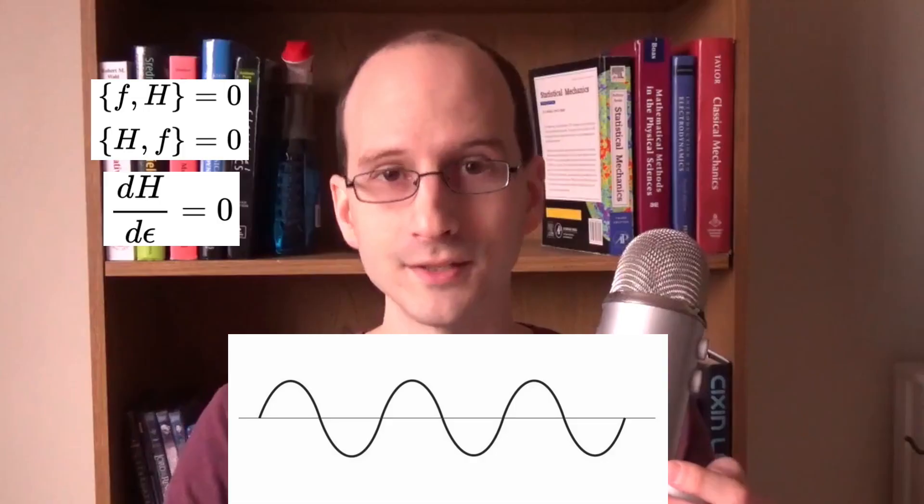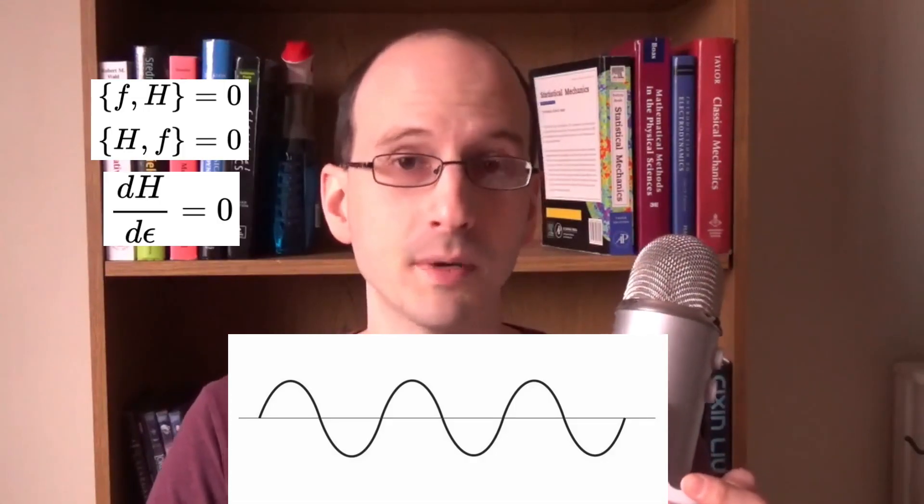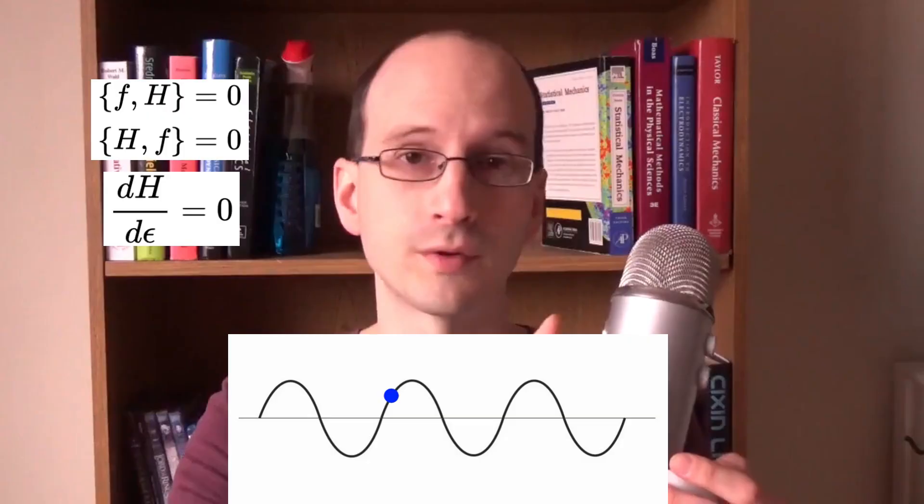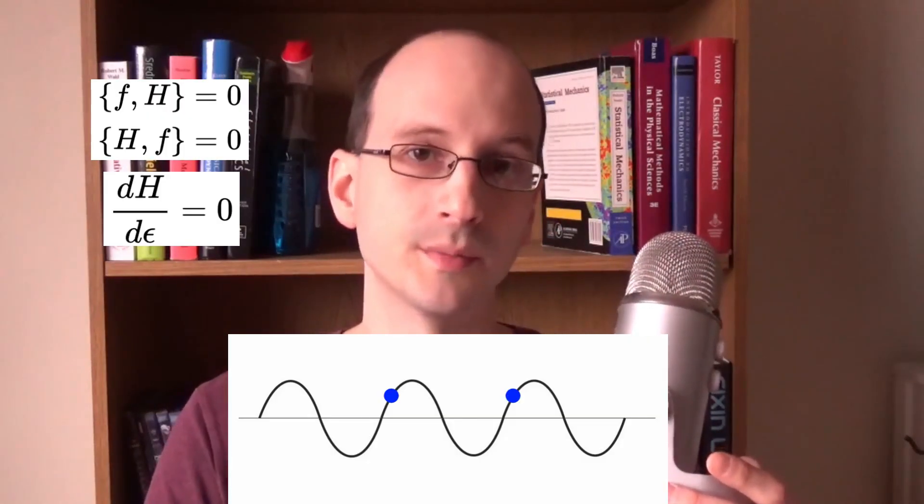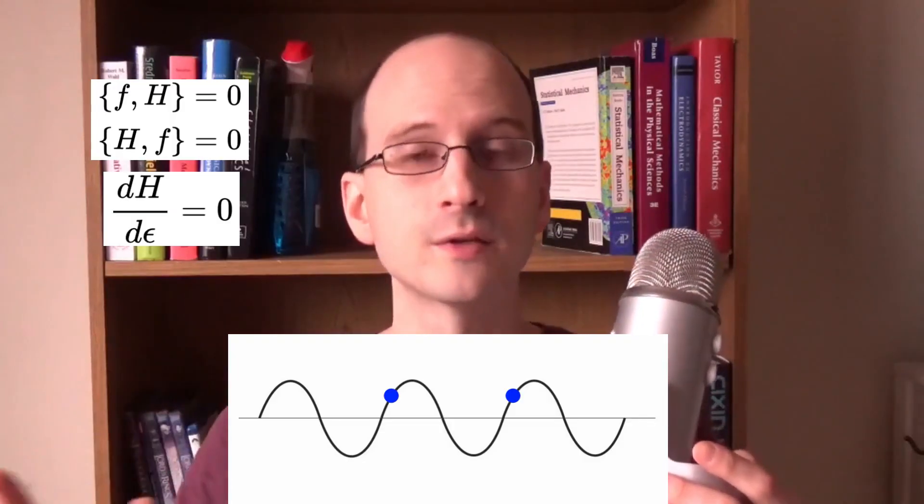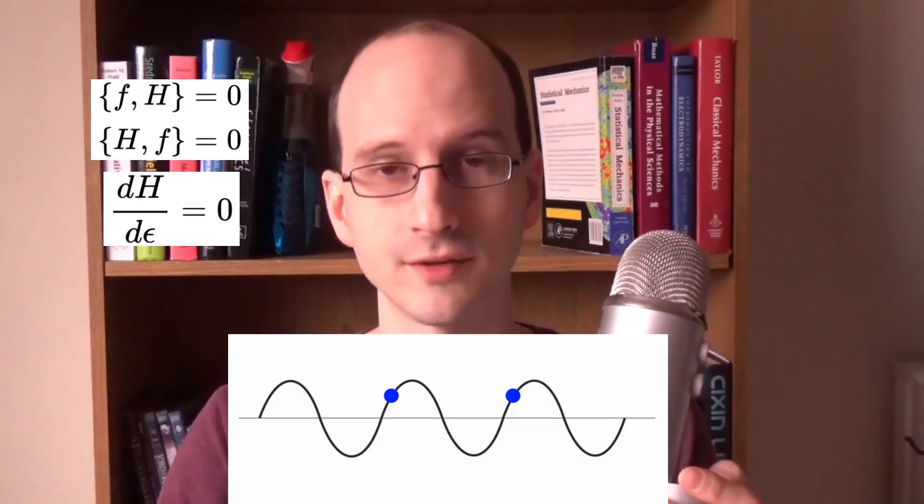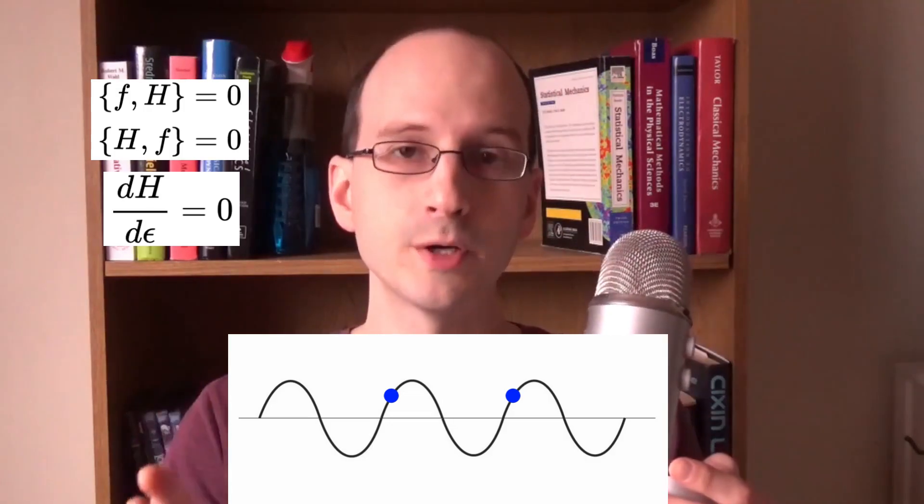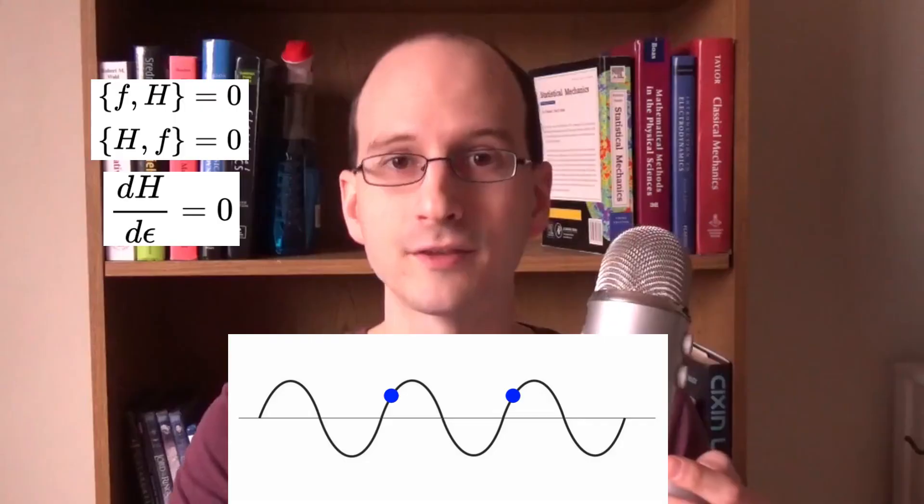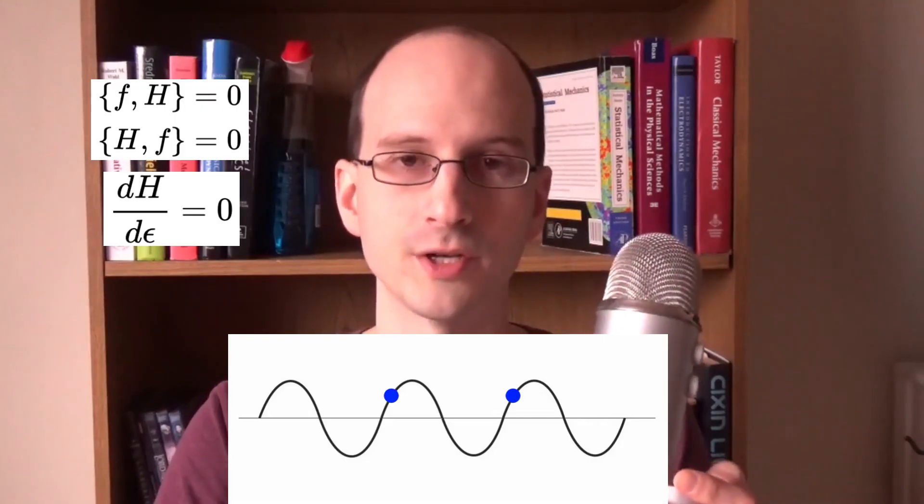A key point here is that the symmetry must be continuous. We could imagine a series of hills in the shape of a sine wave and say, hey, the motion is the same if we start here or if we start here. Therefore, momentum is conserved. Not so, because if we start anywhere between those two points, the motion is different. Something is conserved, but it's not momentum. The motion has to be symmetric along the entire path for the momentum to be conserved in that region.